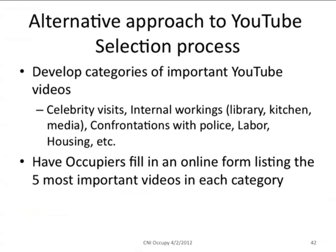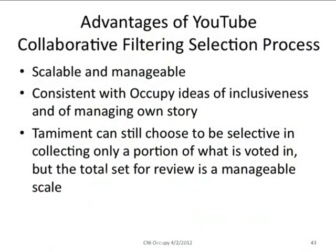We've suggested and are starting to build a tool for an alternative approach to the selection process. The idea is to first have a set of categories — like celebrity visits, internal workings, the library, the kitchen, the media tables, confrontations with police, labor actions, housing actions — and then for each category have the occupiers fill out an online form listing the five most important videos. This kind of collaborative filtering is scalable and manageable, it's consistent with Occupy ideas of inclusiveness and managing their own story, and Tamiment can still choose to be selective — but the total set for review will be manageable, not the 200,000-plus videos.